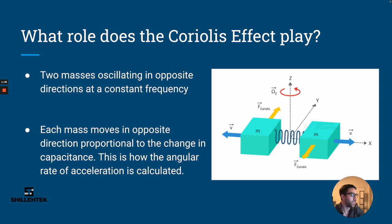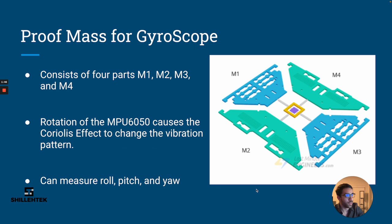Now the proof mass for the gyroscope on the MPU6050 has four components - four proof masses which are attached like this. It needs these four components to measure roll, pitch, and yaw, which are the three degrees of angular acceleration. What happens with the MPU6050 is that the Coriolis effect, in addition to the oscillation of these masses, changes the vibration patterns of all of these masses.